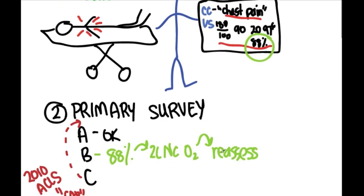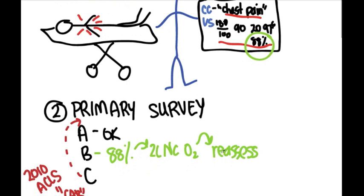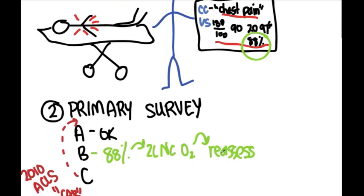And if blood is perfusing all my organs, evidenced by the fact that I have a blood pressure, that I'm mentating well, that I'm not profoundly tachycardic or bradycardic or hypotensive, then my circulation is also likely okay.